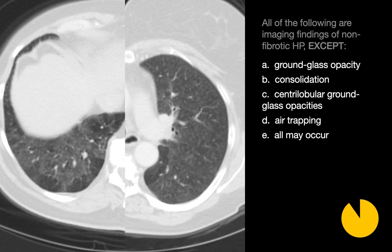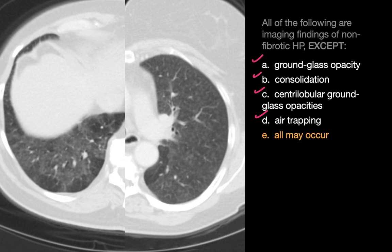All of the following are imaging findings of non-fibrotic HP except... The answer here is E, all of the above. Any of the four imaging findings listed — ground glass opacities, consolidation, centrilobular ground glass opacities, and air trapping — can be encountered in the setting of non-fibrotic HP.